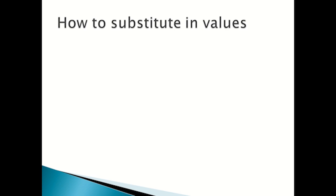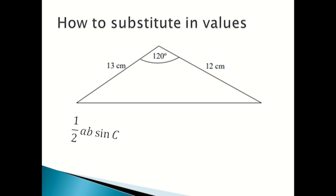How to substitute in values. Let's say this is the triangle that you're given in the question and it would say find the area of this triangle. Then what you'll do, you write down your formula which is a half a b sine c, then you substitute in the values so you become a half times 13 times 12 times sine 120.